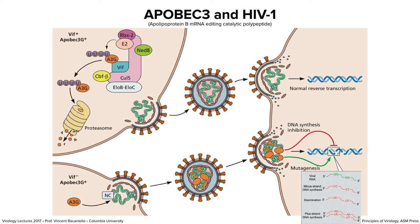ApoBec proteins are extensive mutagenesis proteins — they are deaminases. The viral RNA comes into the cell and is reverse transcribed to get minus-strand DNA. Then the C residues are deaminated by ApoBec, making them into U residues. When the minus-strand DNA is copied to a plus strand, instead of a G being put in, you get an A. This results in extensive mutagenesis of the viral genome — G-to-A mutations — rendering the virus non-infectious. ApoBec also inhibits DNA synthesis.